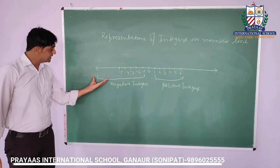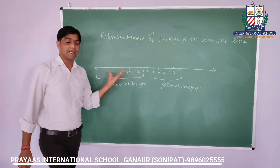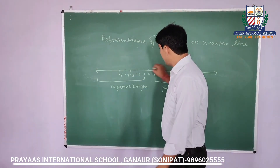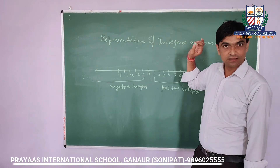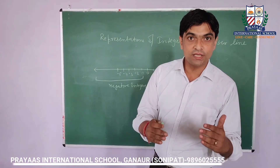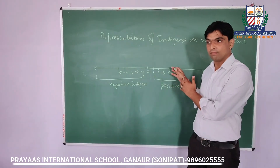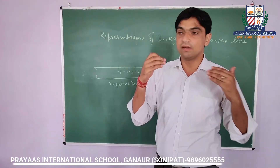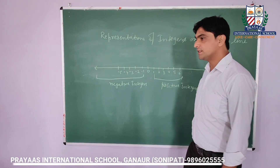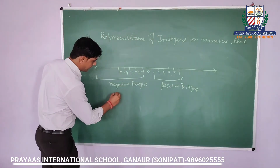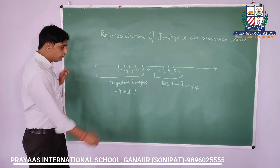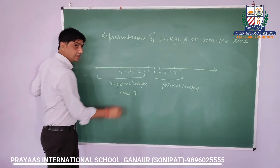Now, these integers have some properties. Firstly, if I take any two integers — I am taking minus 4 and 7 — and if I add these two integers, like minus 4 plus 7, one is negative and the second one is positive. So what do we do here?